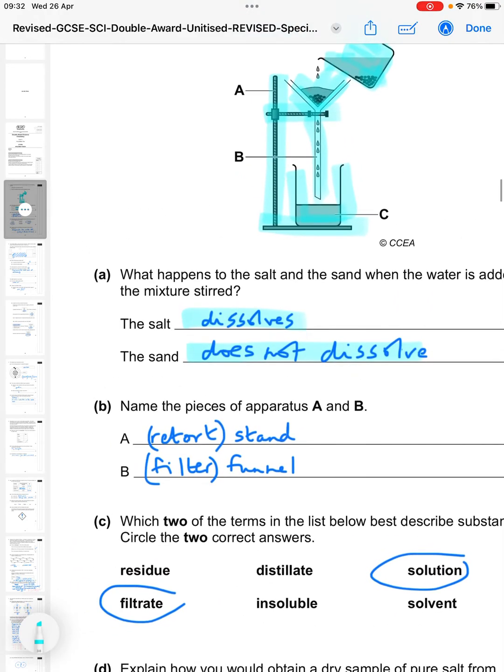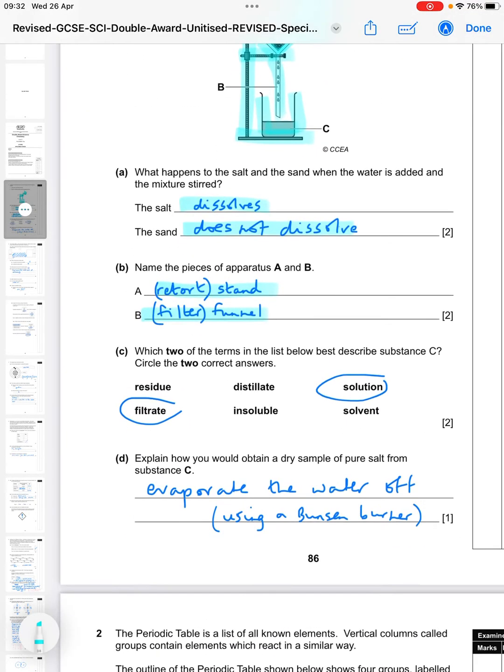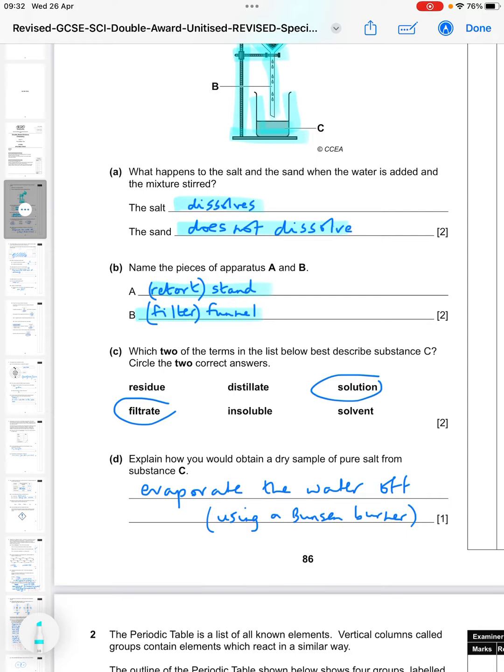So then B, name the pieces of apparatus A and B. A is just the retort stand, as I said, and B is the filter funnel. In the mark scheme, you didn't even have to say retort stand. You just had to say stand, and funnel was enough to get you the mark as well. So C, which two of the terms in the list below best describe substance C? And this is it here down in the beaker. So it's a solution and it's a filtrate. A residue would be a solid, distillate is from distillation, insoluble is something which doesn't dissolve, and solvent is just the liquid which does the dissolving on its own.